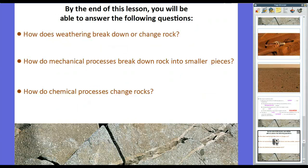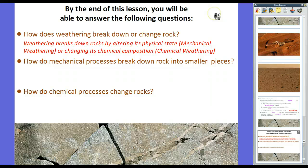So, really long lesson, I know that, but this is really important, mechanical and chemical weathering, especially when we talk about erosion going with that. Now, how does weathering break down or change rock? Well, it does it in one or two ways. Weathering breaks down rocks by altering its physical state, mechanical weathering, or changing its chemical composition, which is chemical weathering. So there's two types, mechanical, changing physical properties, chemical, changing chemical properties.